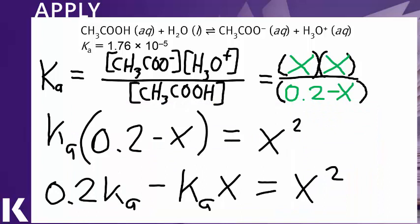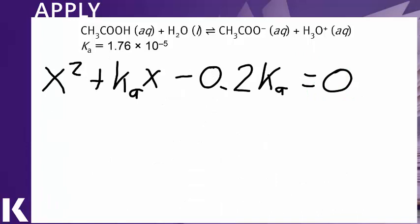Our next step will be to rearrange this and try to get x by itself as much as possible. So first let's multiply through by the denominator, 0.2 minus x, multiply both sides by that, and then we'll take those two x's multiplied by each other and represent that as x squared. Distributing the Ka over that 0.2 minus x term, we find that we have 0.2 Ka minus Ka times x equals x squared. Now the fact that we have an x squared term means that we are really in quadratic territory. So if we rearrange these terms to put it in standard quadratic form, we have x squared plus Ka x minus 0.2 Ka equals 0.